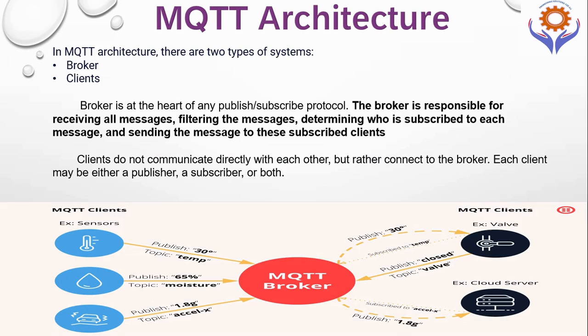In MQTT, there are two main components. The first one is the broker and the second one is clients. The MQTT broker is the heart of any publish-subscribe protocol. The broker is responsible for receiving all types of messages, filtering the messages, determining who is subscribed to each message, and sending the message to the subscribed clients. The clients do not communicate directly with each other. Each client may be either a publisher, a subscriber, or both.